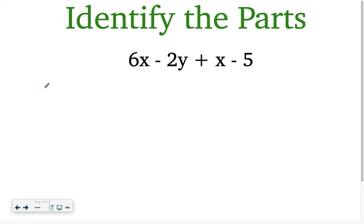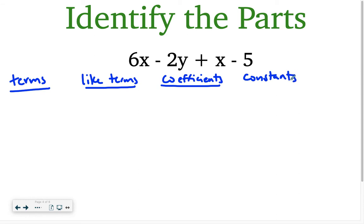All right, so if we identify the parts again. So let's start with terms. And then we have like terms. We still need coefficients. And we need the constants. All right, so the terms, remember you just write down each item that is listed. Make sure you bring down the symbol that's in front of them. If it's a negative, you don't have to write the positives. We just assume that that's there if there's no negative. Our like terms would be 6x and just x.